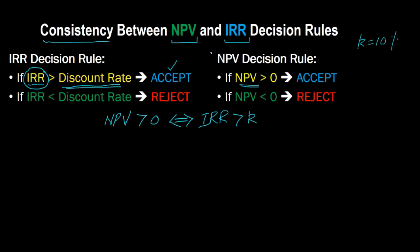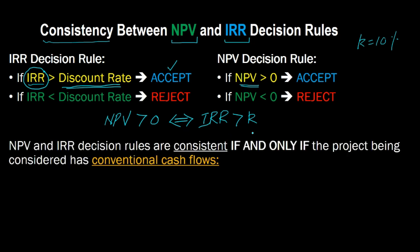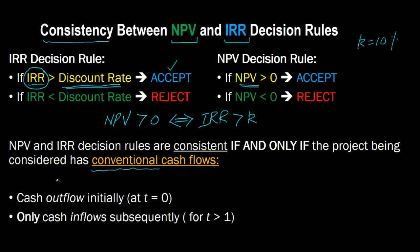Now this is the important part. While NPV and IRR are consistent with each other in general, please note that this consistency only holds if the projects you are considering have conventional cash flows. This relationship — NPV greater than zero meaning IRR greater than the discount rate — only holds for projects with conventional cash flows. A project has conventional cash flows if two conditions are met: first, there is only one cash outflow, which is usually at time period zero, an upfront investment; and second, after that investment has been made, all you see subsequently are cash inflows.